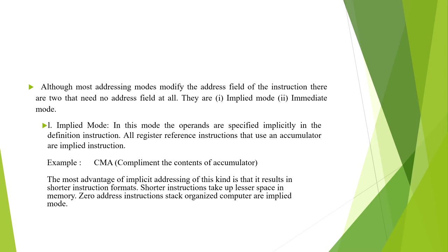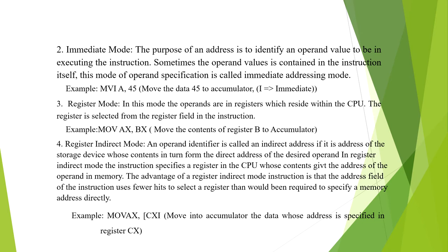The second mode is Immediate Mode. The purpose of an address is to identify an operand value to be used in executing the instruction. Sometimes this operand value is contained in the instruction itself — this is called immediate addressing mode. Example: MVI — move data 45 to the accumulator. Here 'I' stands for immediate.